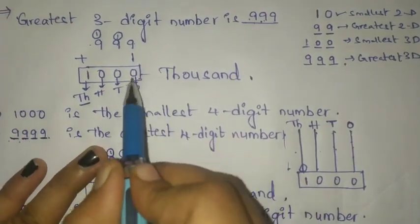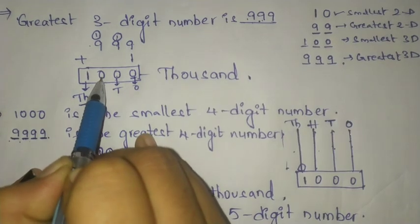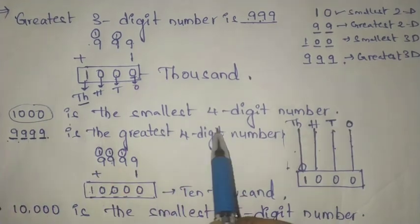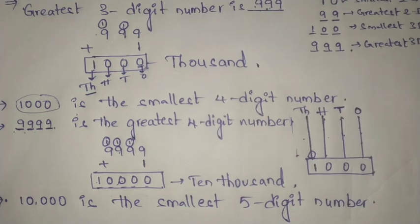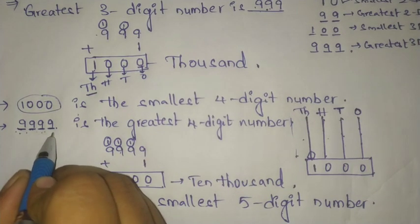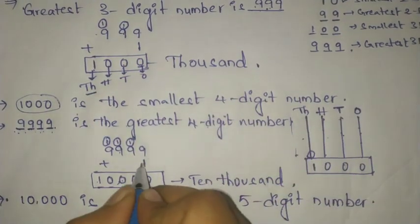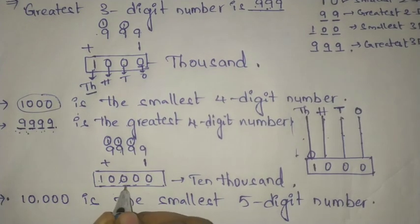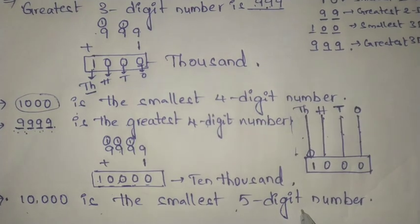In a four digit number, this place is ones, this is tens, this is hundreds, and this is thousands. Thousand is the smallest four digit number. The greatest four digit number is 9999.